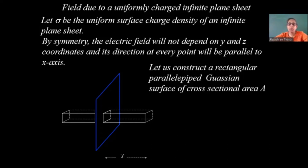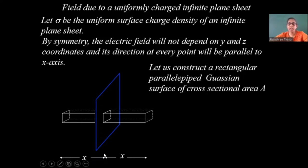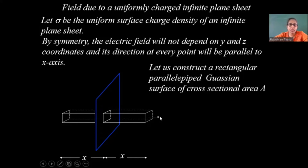This surface is at a distance x from the plane. This direction is the plus x direction, and this direction is the minus x direction. So the electric field at this face will be in the plus x direction, and the electric field on the other side will be in the minus x direction.